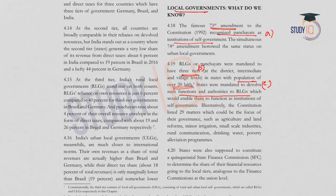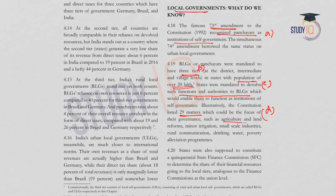States are responsible for assigning duties, functions, and authorities to Panchayats. The constitution has listed 29 matters which could be the focus of their governance, including agriculture, land reforms, minor irrigation, small-scale industries, rural communication, drinking water, poverty alleviation programs, etc.